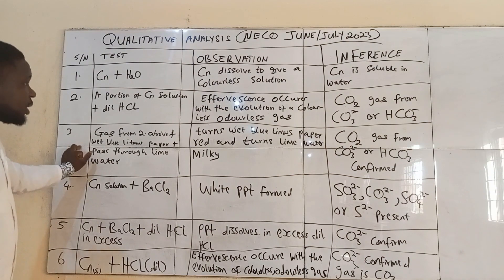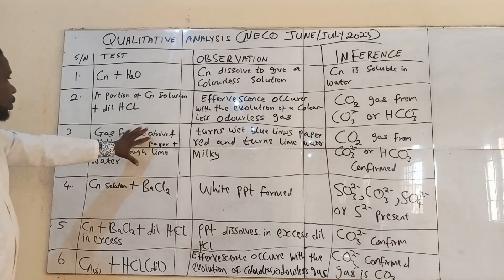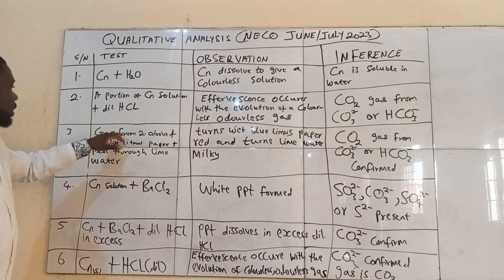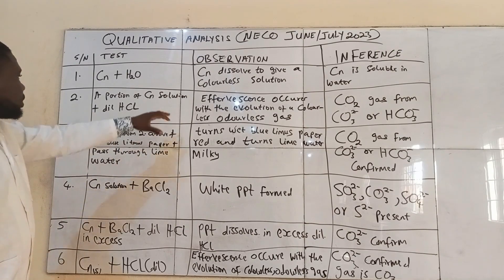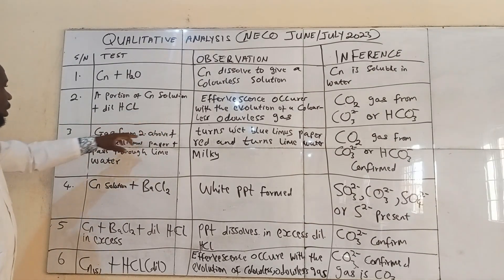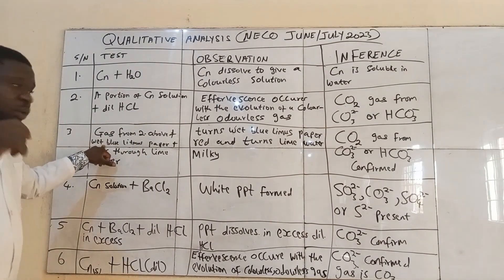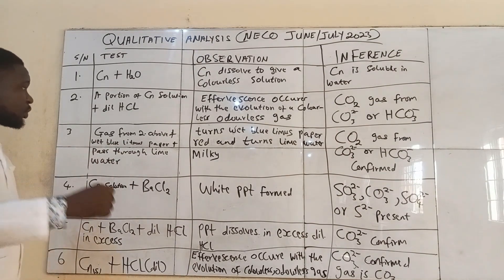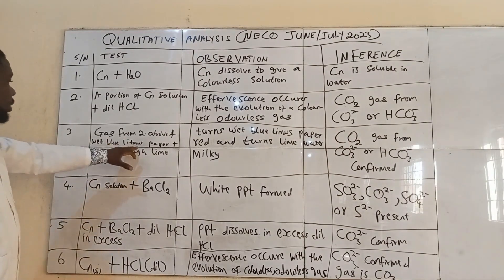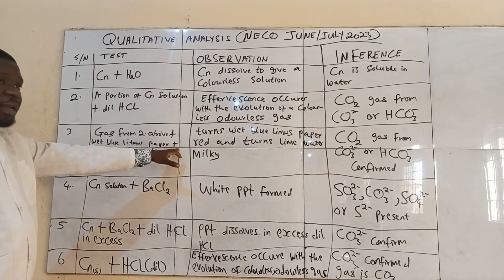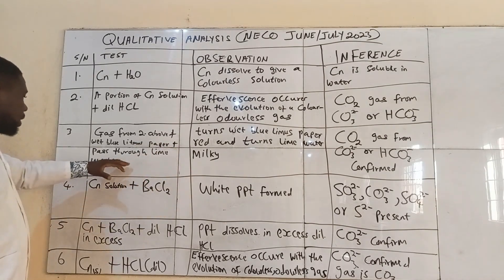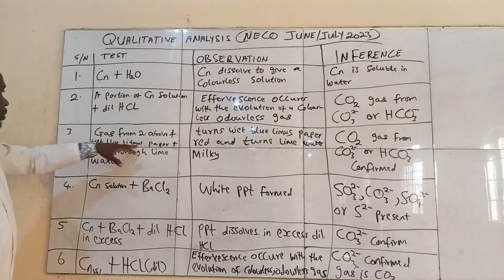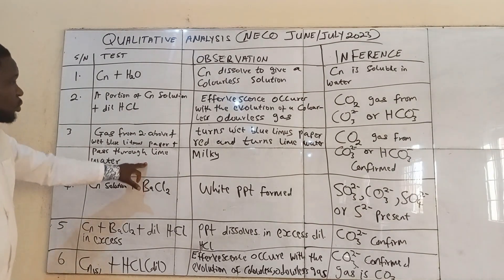The third experiment is to confirm whether this is actually CO₂ gas. As the gas is coming out from experiment 2, you bring a wet piece of blue litmus paper and put it at the mouth of where the gas is coming out from. Then you observe what happens, and also pass the gas through lime water.